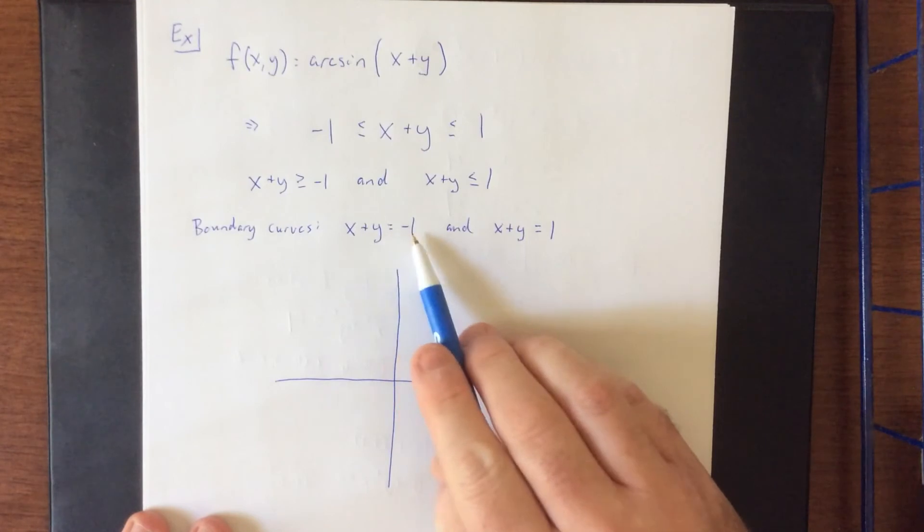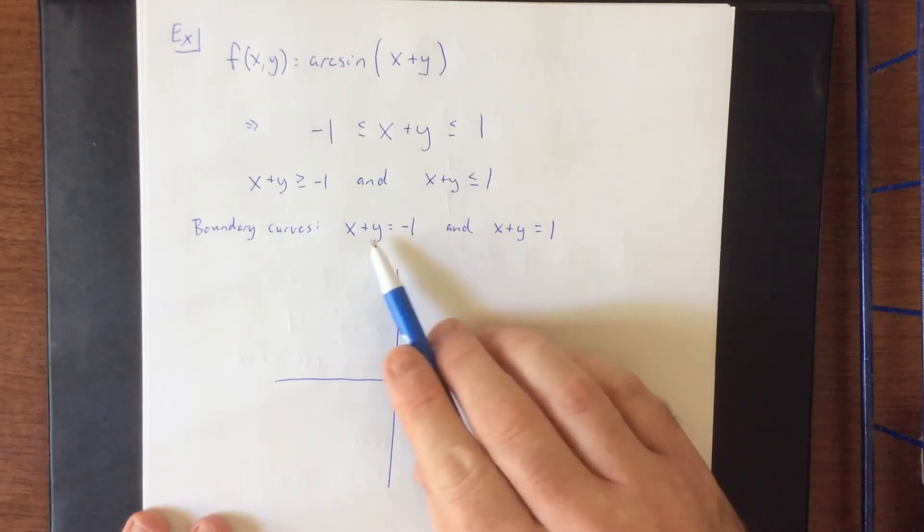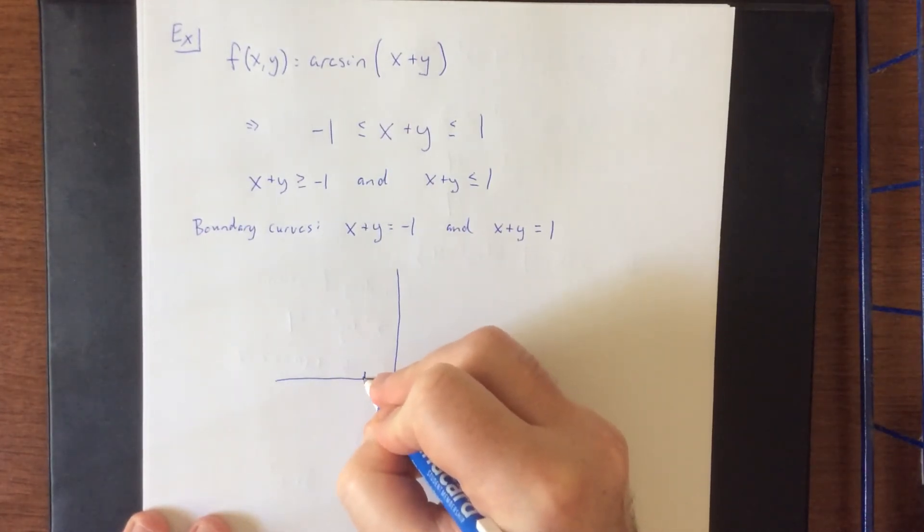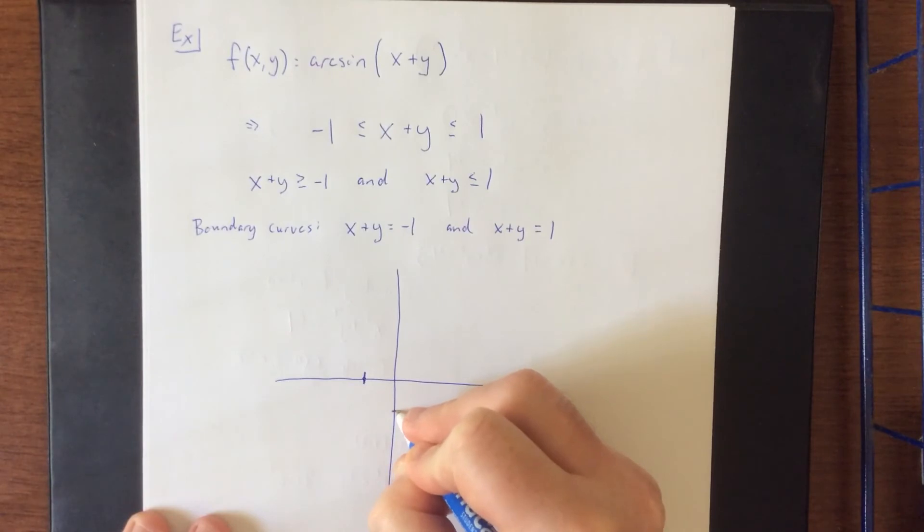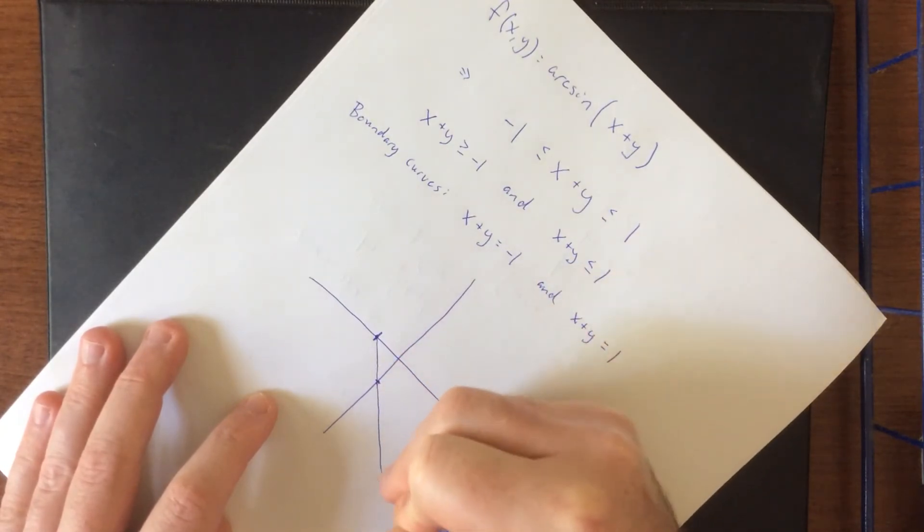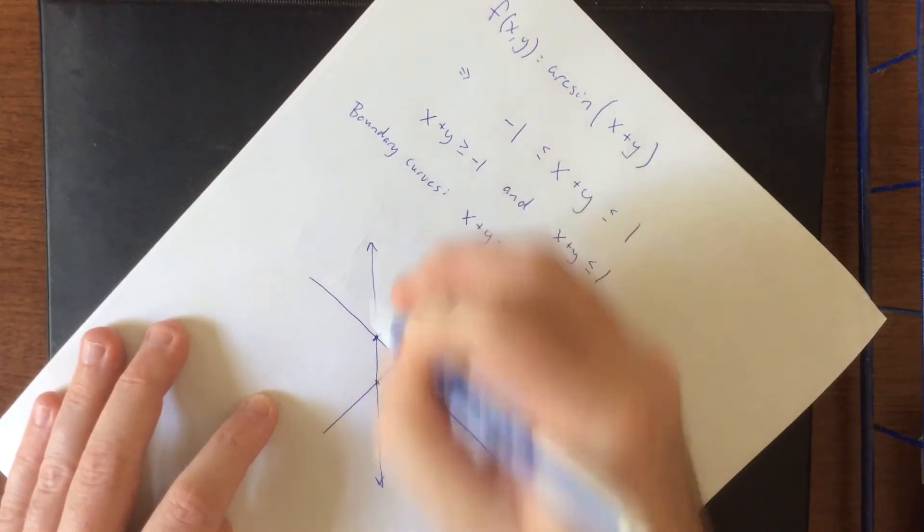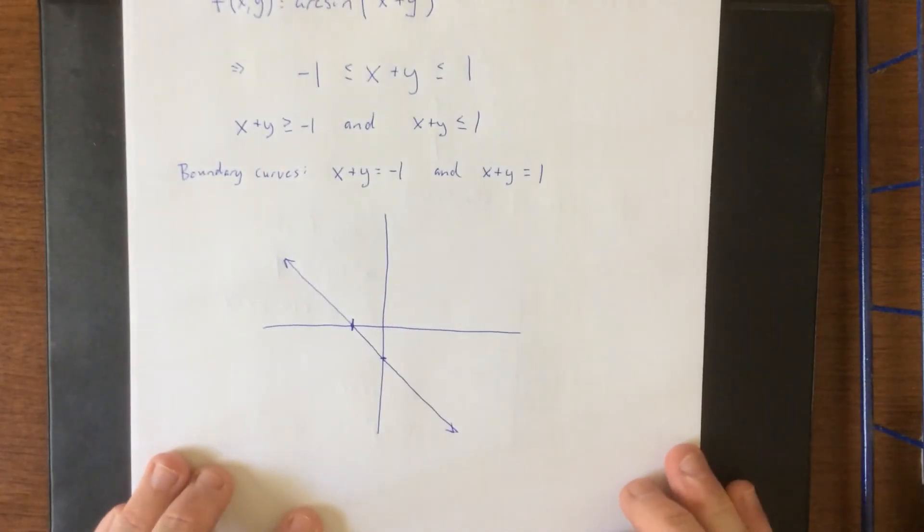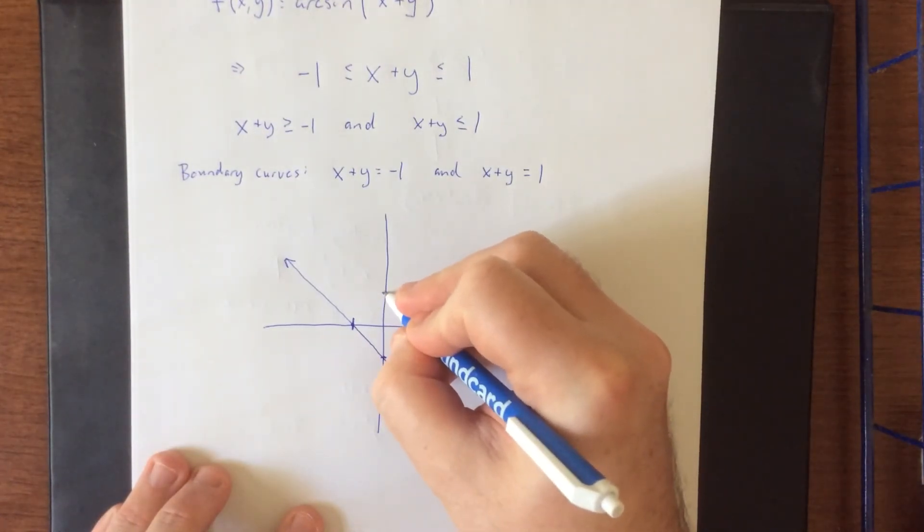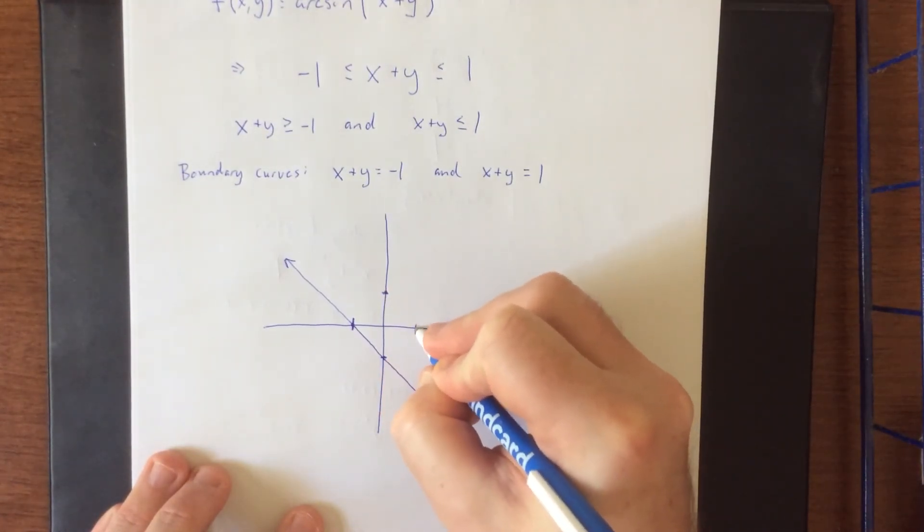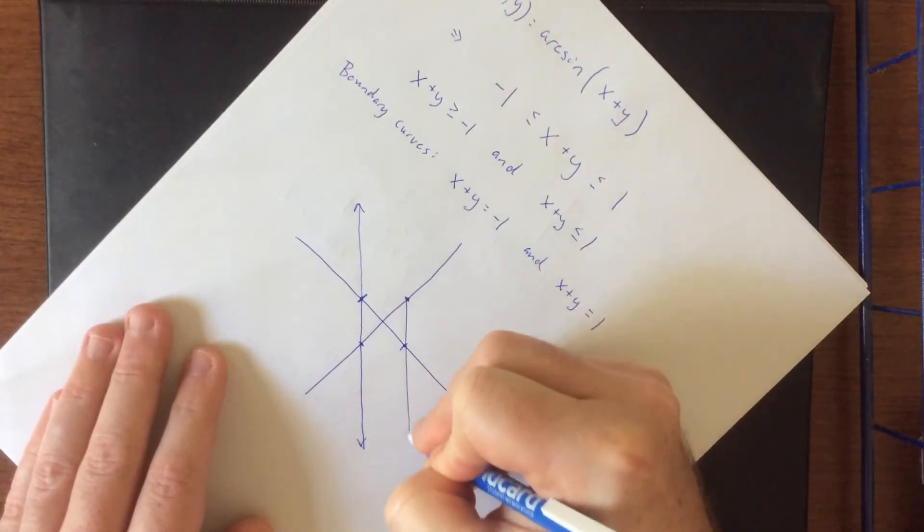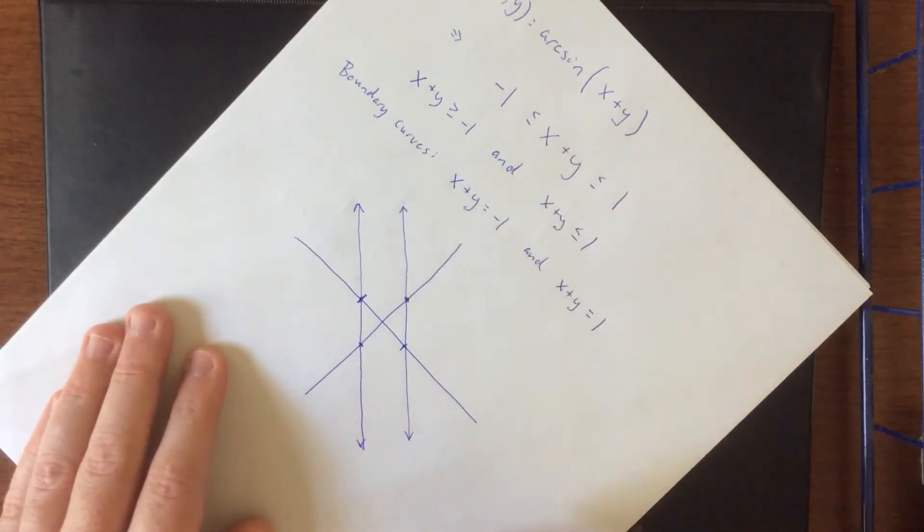For x + y = -1, I would recommend graphing this by finding the two intercepts. That would be x = -1 and y = -1. So x-intercept at (-1,0) and a y-intercept at (0,-1). We'll draw the straight line that passes through those two points. I should probably keep a straight edge close by for drawing these lines. That would be really convenient. Additionally, we could do the same thing for x + y = 1. That would have a y-intercept up at (0,1) and an x-intercept over at (1,0). And once again, we would be drawing the straight line that passes through these two points. So we get this pair of parallel lines.